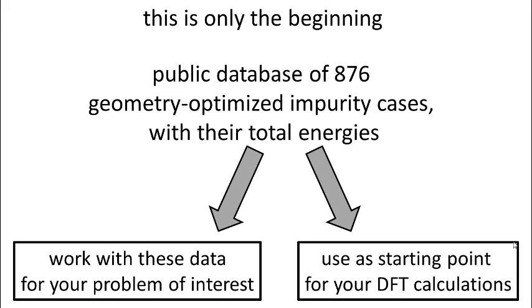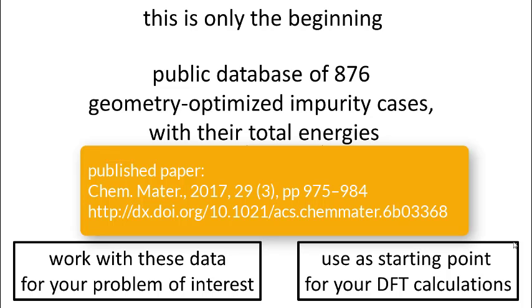Now, more important than this disagreement is what you can do now with this set of information. Because we have for two host lattices six different impurity positions for 73 different elements. That's a lot of information. We make this information available in a database that comes with the paper where this will be published.